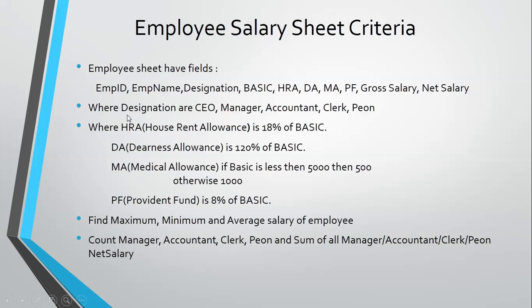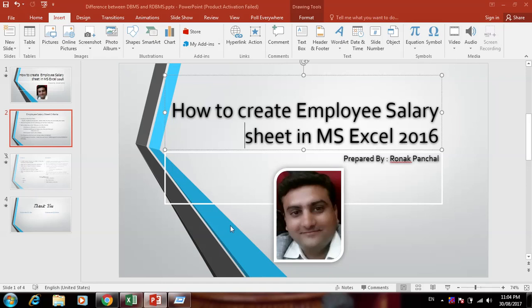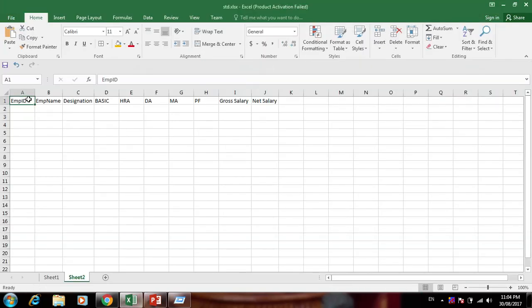PF (Provident Fund) is 8% of basic. Once we create all these things, we will find the maximum, minimum, and average salary of employees, then count how many managers, accountants, clerks, and peons are in the sheet, and also find the sum of net salary by designation.